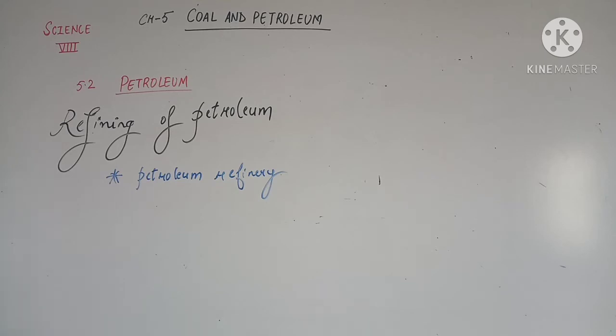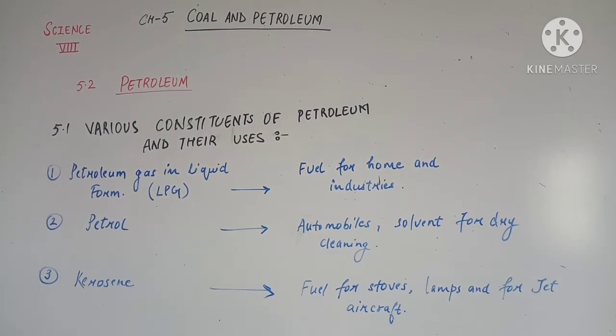Table 5.1, various constituents of petroleum and their uses. What are the things in petroleum and what are their uses? They are given in this table. First, petroleum gas is used in liquid form, LPG, fuel for home and industries. Everyone knows that it is used in home and industries as a fuel.